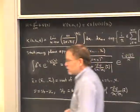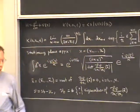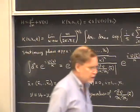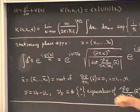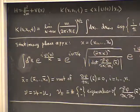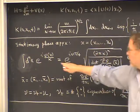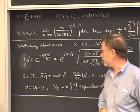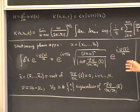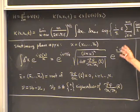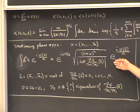Last time I went over the stationary phase approximation as basically an exercise in mathematics. It's an approximation for an integral in which you've got a rapidly oscillating integrand. Here we're thinking of kappa as being small, which is what makes the integrand oscillate rapidly. The one-dimensional case went over all right, but for the multidimensional case I was pretty sketchy. So I want to start today by filling in more of the details about this multidimensional result of the stationary phase approximation.